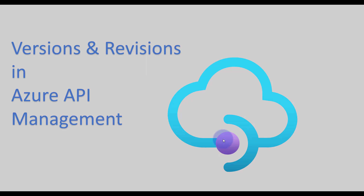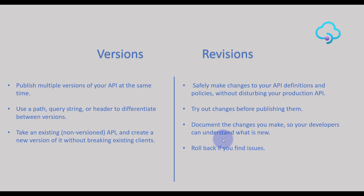Welcome back to the channel. Today in this session we are going to learn how to create revisions and versions in API management. Let's first understand what API versions and revisions are. API versions allow you to create multiple versions of the same API. Consider the scenario where you have a single API created and you are adding some enhancements or modifications that could contain breaking changes.